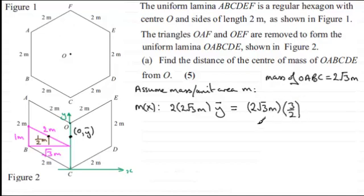And not only have we got this moment, but we got the moment of the lamina OEDC, which is going to be exactly the same as this one. So I'm just going to double it. So I can cancel through here. I can see that we've got 2 times 2 root 3 m on both sides. So therefore, y-bar equals 3 over 2.